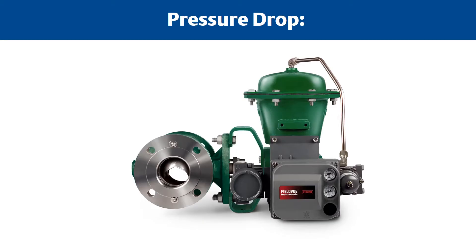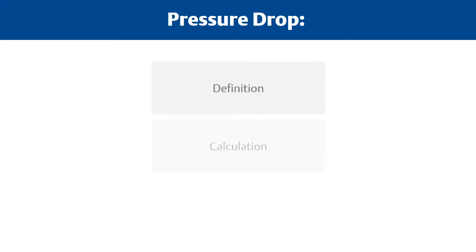Pressure drop, also known as pressure loss, is an important selection criteria for control valves as it's used in the sizing calculation. Let's define the term pressure drop, show how it's calculated, and discuss why it's important for engineers designing flow systems.